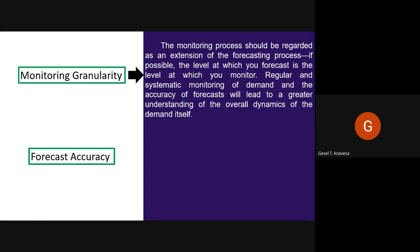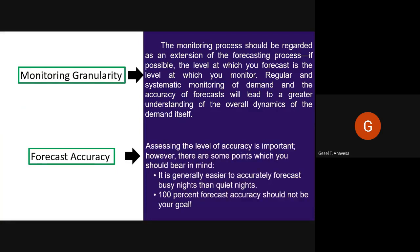Another aspect is forecast accuracy. You have to assess the level of accuracy, as it is very important; however, there are some points to bear in mind. It is generally easier to accurately forecast busy nights than quiet nights. One hundred percent forecast accuracy should not be your goal — for example, if you forecasted 60% occupancy on a given night 28 days or 14 days out, would you be better off if that was exactly achieved, or if you put tactics in place to drive more demand and ended up with 70% occupancy?